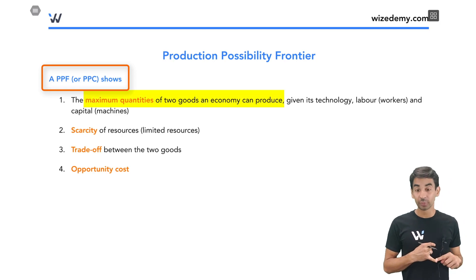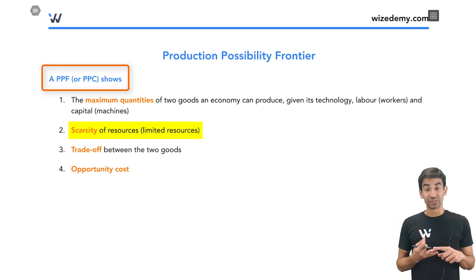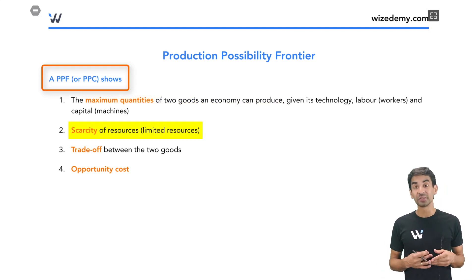First thing is the maximum quantities of two goods that an economy can produce, like let's say cars and bikes. It shows us scarcity, which we saw scarcity means there's a limited amount of resources like workers, land, machines, so there's only so many cars and bikes that we can produce.